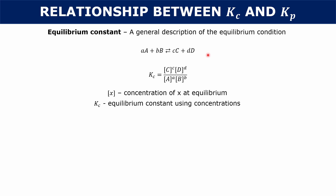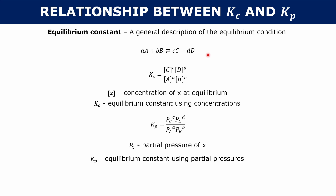If you had a reaction where all your reactants and products are gases, you could talk about your Kp. Your Kp is your equilibrium constant using partial pressures. So if A, B, C, and D were all gases, your Kp would be the partial pressure of C to the power c, times the partial pressure of D to the power d, over the partial pressure of A to the a, times the partial pressure of B to the b.